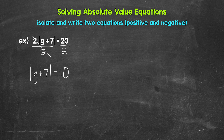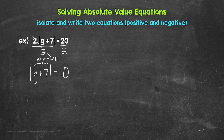The absolute value is now isolated. We know that the absolute value of g plus 7 has to equal 10. This gives us two possibilities, two scenarios, so we will have two solutions. g plus 7 can either equal 10 or negative 10, because the absolute value of 10 is 10 and the absolute value of negative 10 is 10. So we need to write two equations: g plus 7 equals 10, or g plus 7 equals negative 10.